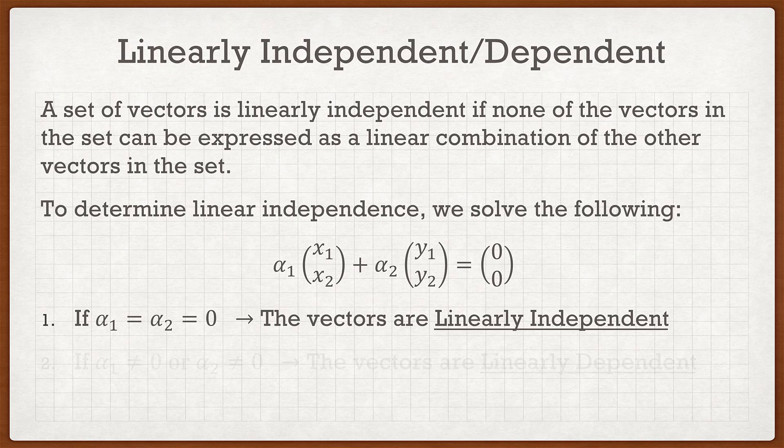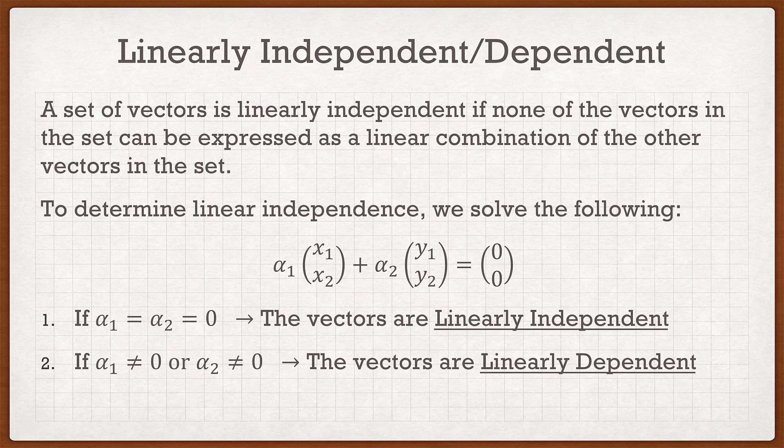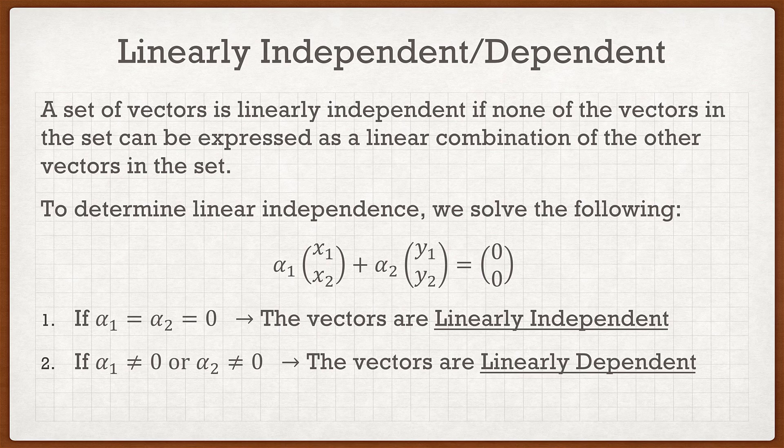Now for part C, we're going to figure out the second case. If alpha 1 does not equal 0 or alpha 2 does not equal 0, and remember the OR in there, as long as one of them does not equal 0, that's good enough to meet this condition. And if this condition is met, the vectors are considered linearly dependent. So that has to do with parts A and C. First one's a little proof, and it's not hard to find a vector y that'll make alpha 1 not equal to 0.